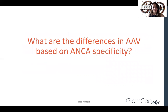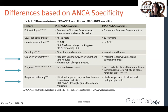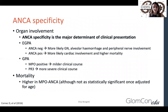What are the differences between ANCA-associated vasculitis based on ANCA specificity? This table provides an overview of the differences between PR3-ANCA and MPO-ANCA, focusing on organ involvement, prognosis, and response to therapy. People with PR3-ANCA tend to respond better to rituximab compared to cyclophosphamide, whereas people with MPO-ANCA have a similar response whether rituximab or cyclophosphamide is used. ANCA specificity is a major determinant of organ involvement: in EGPA, patients who are ANCA negative are more likely to have alveolar hemorrhage, renal involvement, and peripheral nerve involvement, whereas ANCA-positive patients are more likely to have cardiac involvement and increased mortality.